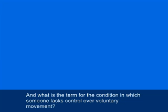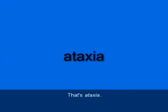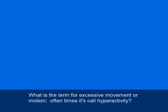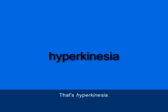What is the term for the condition in which someone lacks control over voluntary movement? This lack of control or coordination is often associated with some kind of disorder of the cerebellum. That's ataxia, A-T-A-X-I-A. And what is the term for excessive movement or motion — often called hyperactivity? That's hyperkinesia, H-Y-P-E-R-K-I-N-E-S-I-A.